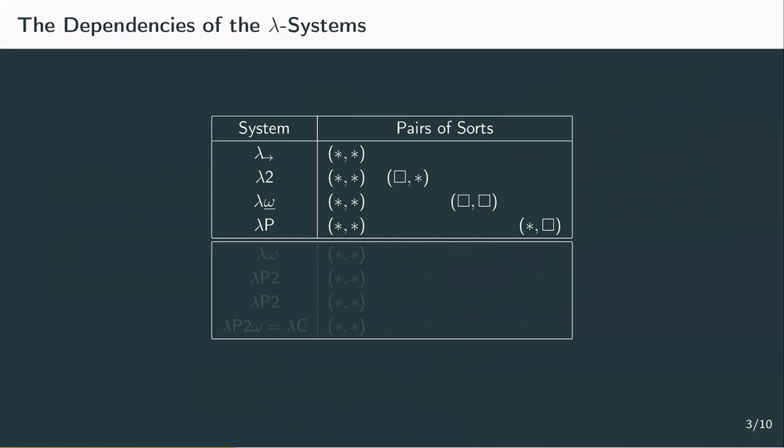So let's take a look at all of those dependencies and reduce the information to its bare core. We're going to form pairs of symbols to denote these dependencies. The first component will say what is abstracted, and the second component from what we abstracted. We use star to refer to terms and box to talk about types.